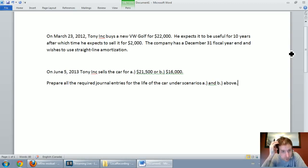The company has a December 31st fiscal year end and wishes to use straight line amortization. On June 5th, 2013 Tony Inc. sells the car for A $21,500 or B $16,000. Prepare all the required journal entries for the life of the car under scenarios A and B. So we're going to buy a car, we're going to amortize it for a little while, and then we're going to sell that car and we'll see how to do all of the journal entries for an asset, for kind of the life of this asset.